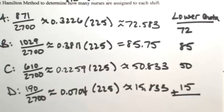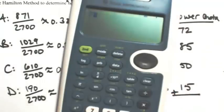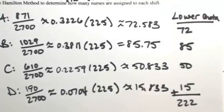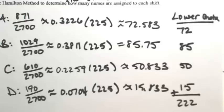So giving each one the lower quota, when I add all of this together, let's see how many nurses are left. So 72 plus 85 plus 50 plus 15 gives us 222 nurses. We need 225, so that means there's three nurses left over. So the Hamilton method tells you to assign the nurses one by one to each shift that has the higher fractional part.